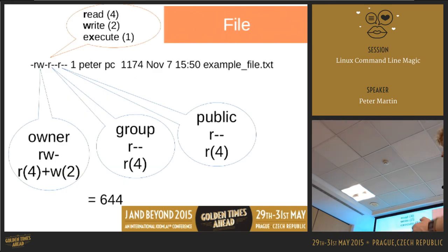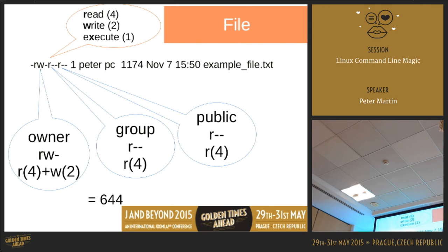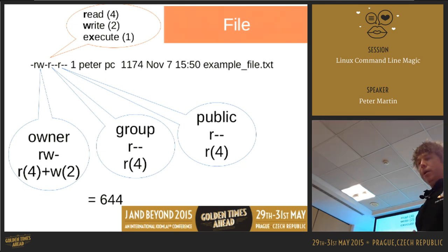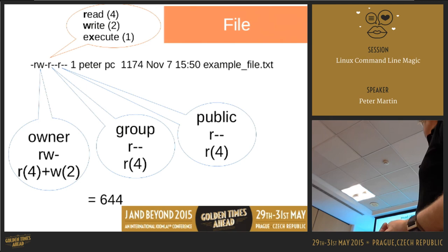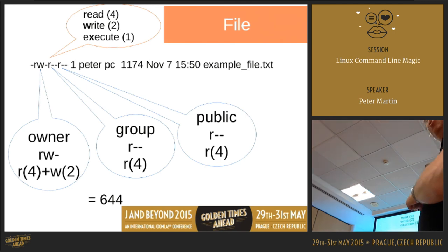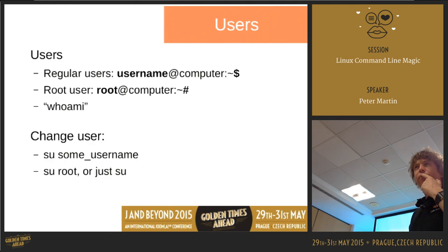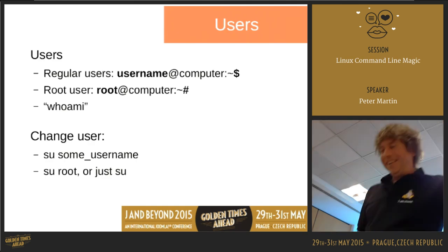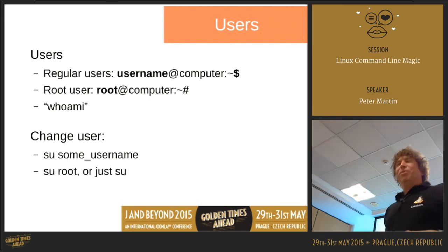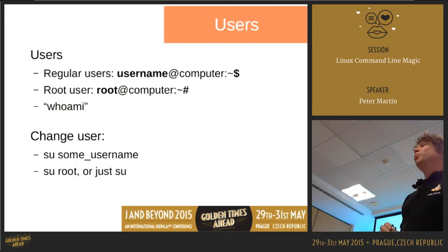On the command line, 'ls -l' shows something like 'rw-r--r--': the first bits are the owner permissions, then the group, then public. This represents 644, which is how it should be for files. Folders should be 755.